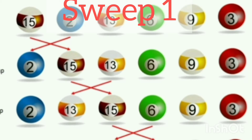The original list is: 15, 2, 13, 6, 9, and 3. We start from the left side and go to the right. First, we compare the first two values — 15 and 2. Since we want the list in ascending order, we exchange their positions: 2 comes to the first position and 15 moves to the second position.